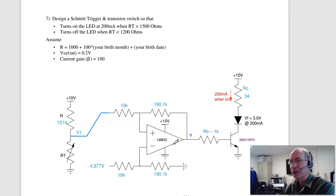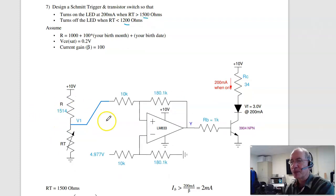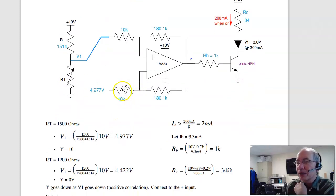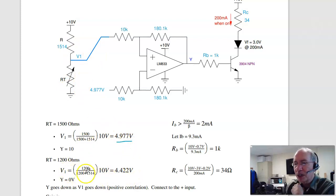Problem 7. Design a Schmidt trigger so that it turns on at 1500 ohms, turns off at 1200 ohms, where this is your birth date. So starting out, V1, I turn on by voltage division at 4.97 volts. I turn off by voltage division at 4.42 volts. So it looks like this. I turn on at 4.97. I turn off at 4.42.